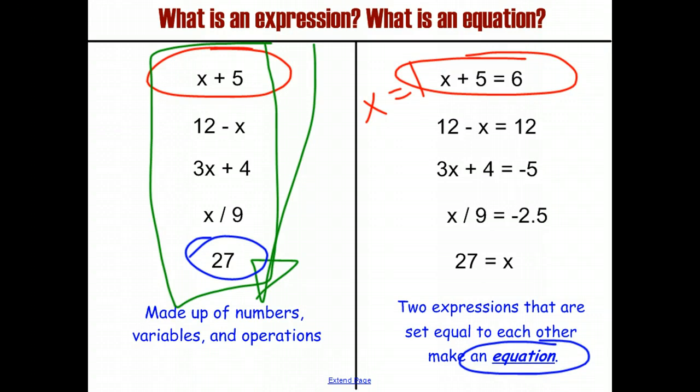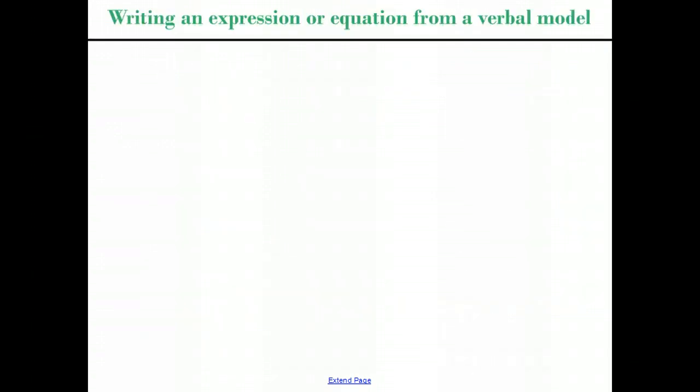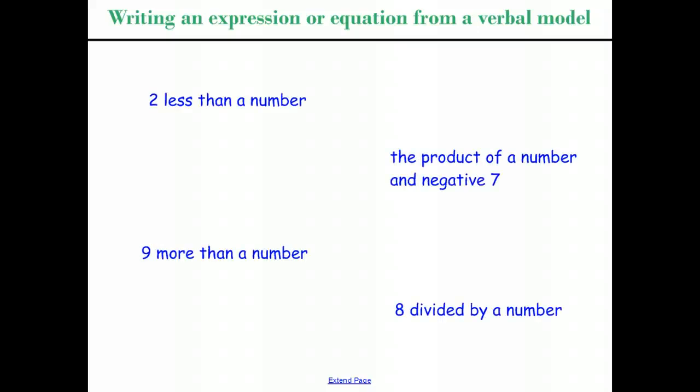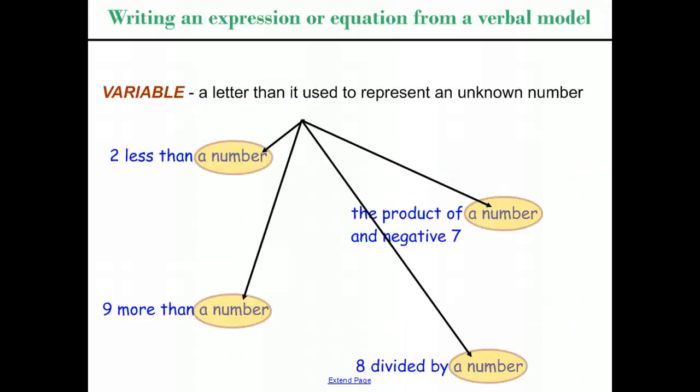So let's go ahead and look at some ways of writing an expression or an equation from a verbal model. Now what is a verbal model? Verbal models are things like 7 less than a number, the product of a number and negative 7, 9 more than a number, 8 divided by a number. A short phrase of words that describes some operation that we're about to do. In this case, we can see that there is a common phrase to each of these verbal models. In each of these verbal models, we see the phrase a number. And when we see a phrase like a number, we are not entirely sure what number that is. It's not an invitation for us to make up a number and put it in there. We need to find a way of representing that. Any number at all could go into that expression. And to do that, we go back to the variable, which again is just a letter used to represent an unknown number.